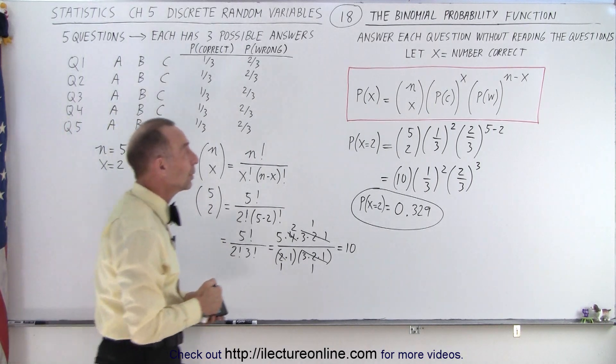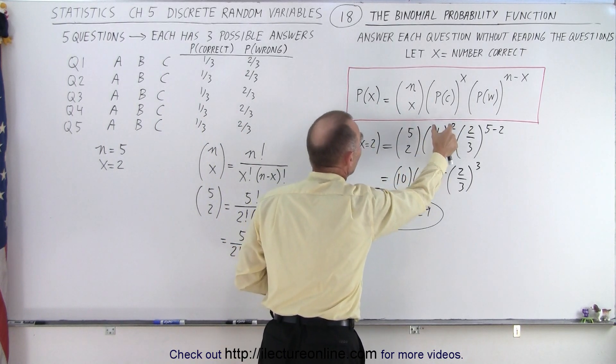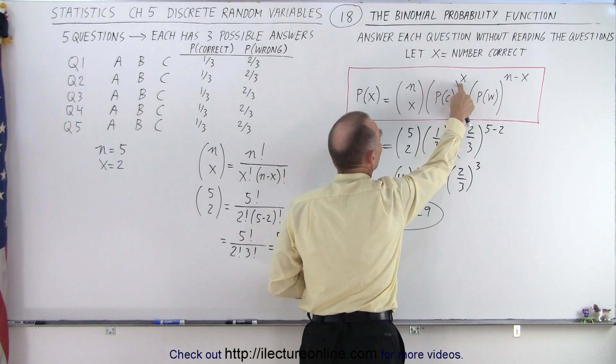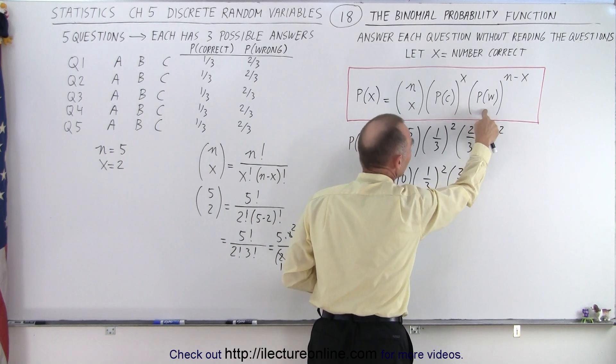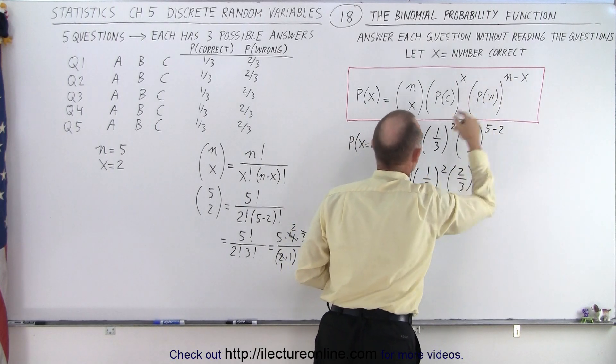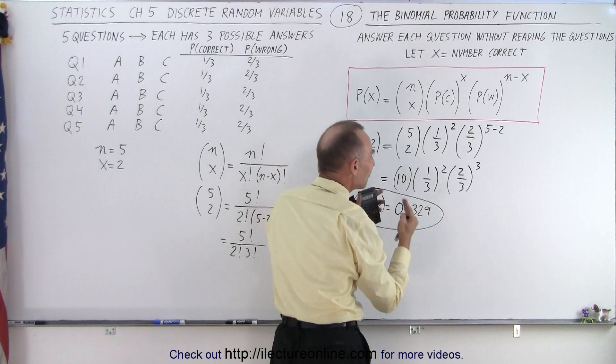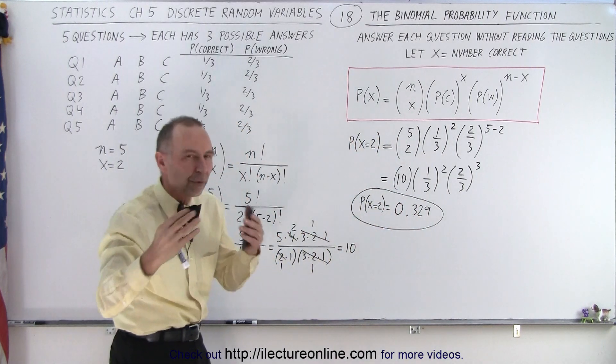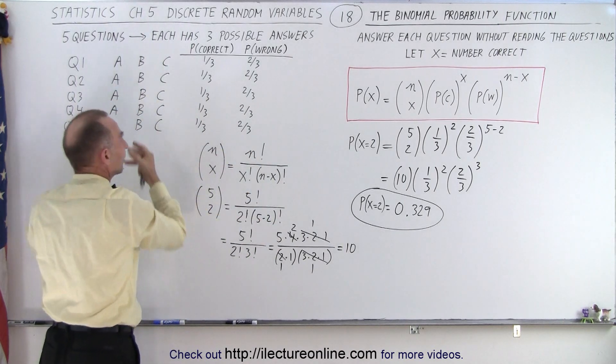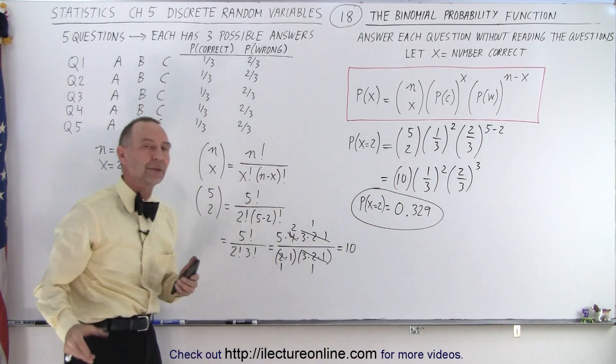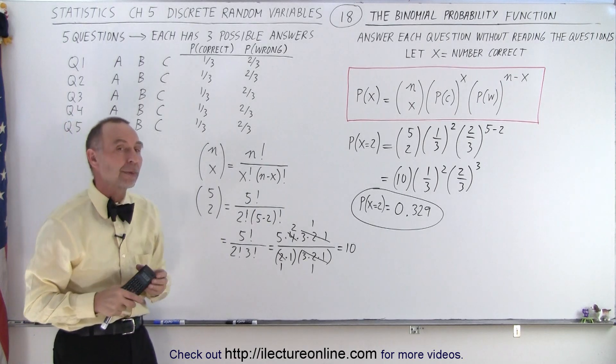And notice, the most important part is this is how we calculate it. This is what we call the binomial probability function. We have the probability getting correct raised to the number of times that we want it to be correct, the probability that a question will be wrong raised to the number of questions that are expected to be wrong based upon our request for probability, and then we multiply it times this, that is the weighting factor, so to speak, as to the total number of combinational ways in which we can get two correct and three wrong with this kind of test setup. There's ten different ways in which this can happen, and therefore that's where the number ten comes from, and that's the essence of what we call the binomial probability function.